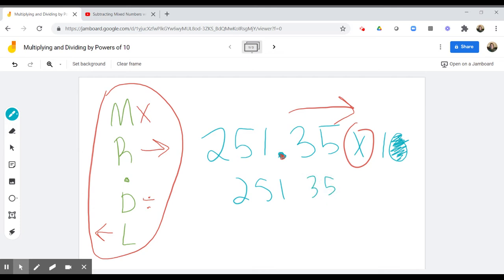So this decimal between the digits 1 and 3 is going to move one place to the right and its new home is going to be between the 3 and the 5. So the final product of 251 and 35 hundredths multiplied by 10 is going to be 2,513 and 5 tenths.